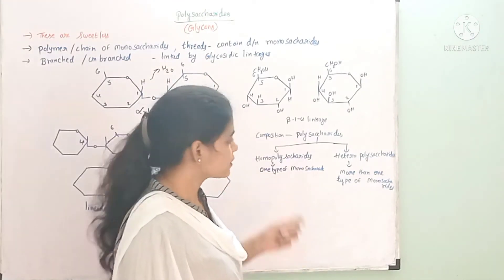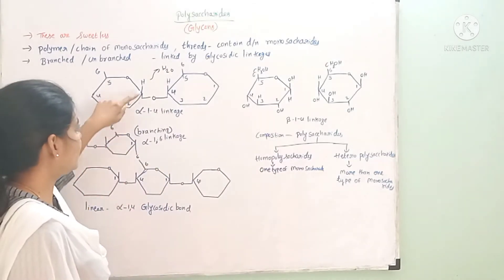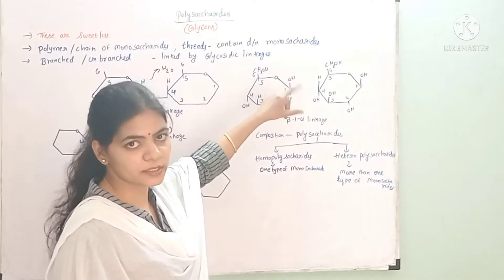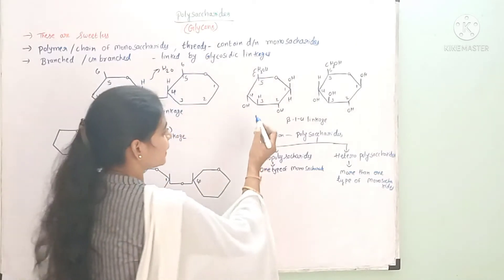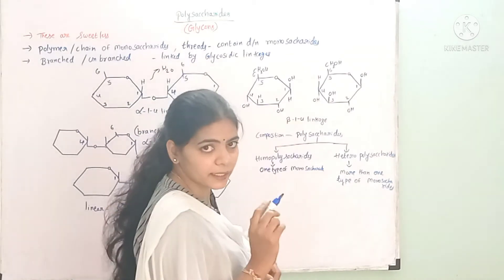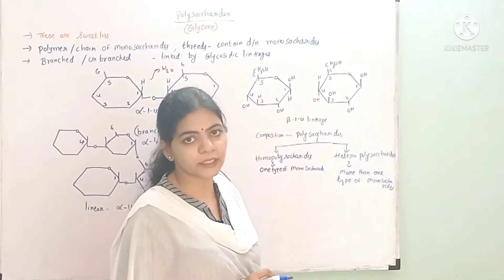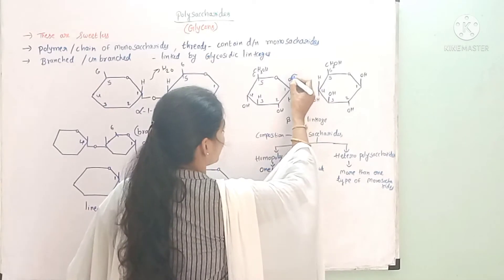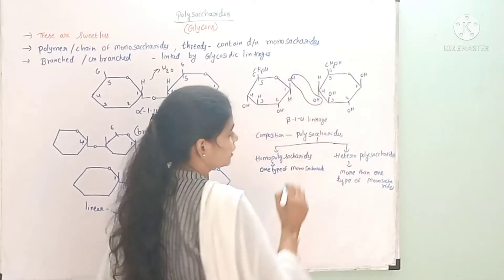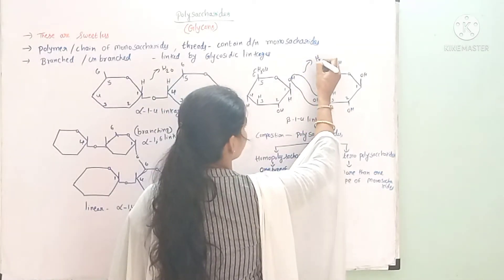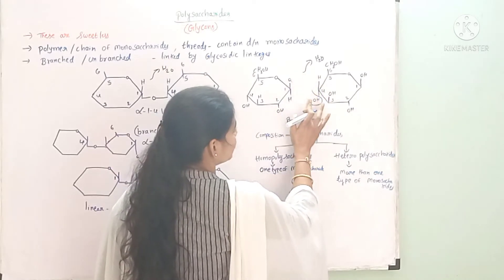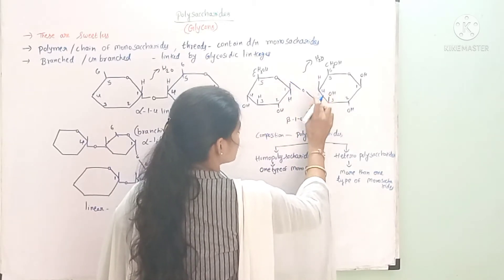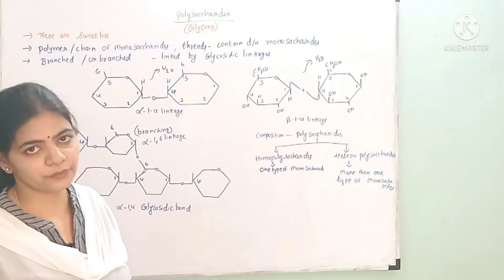With beta glucose, the configuration changes. In alpha, the hydroxyl at the first carbon is in one direction; in beta glucose, the hydroxyl group and configuration are in a different direction. When beta glucose forms a glycosidic linkage between the first and fourth carbon, a water molecule is removed. This is called beta 1,4 linkage.